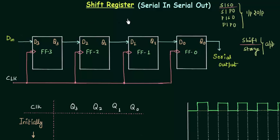A shift register is a sequential circuit that is used for data storage, data transfer, and certain arithmetic and logic operations. I will first explain the working of the shift register, then we will plot the waveform, and finally I will explain the use of shift registers in real life.